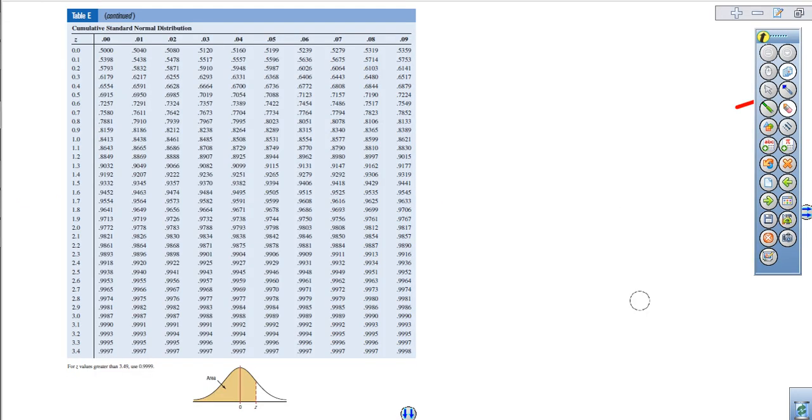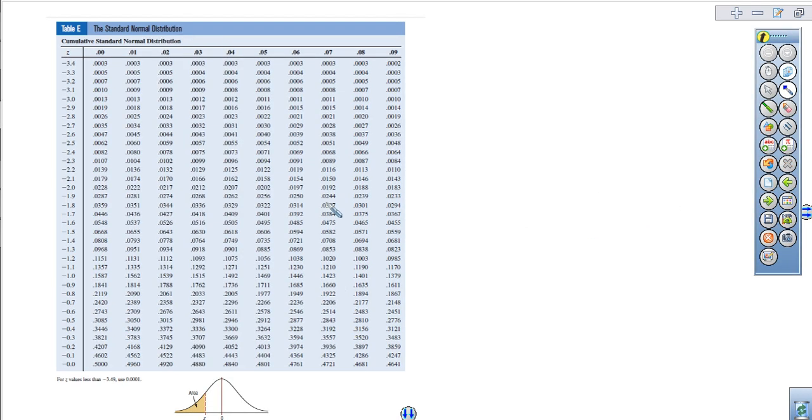All right. So back over here, we had our area or our percent we're looking for under the curve was 0.7123. So if I went to the negative z table, the negative portion, you'll notice that if you look at these areas inside of here, the largest area is 0.5. Because if I traveled from zero to the mean, that would represent 50%.